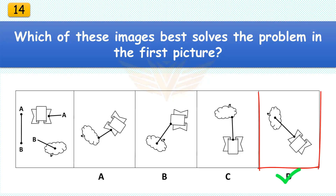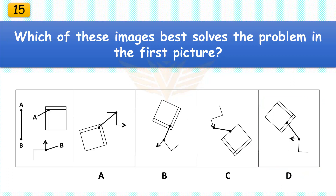Which of these images best solves the problem in the first picture? The correct answer is D. Rotate the award banner 135 degrees and rotate the speech cloud 90 degrees.